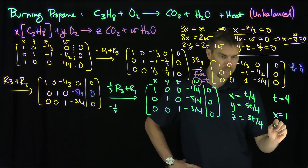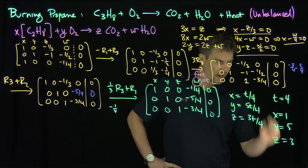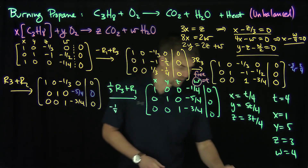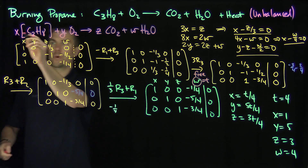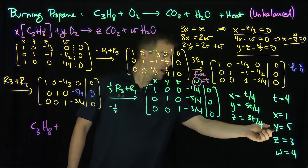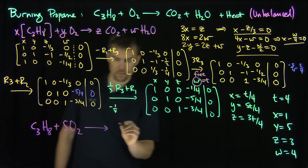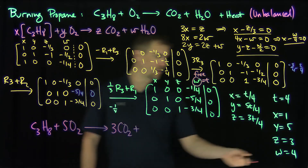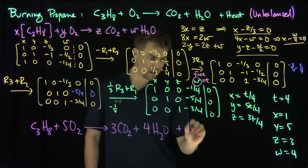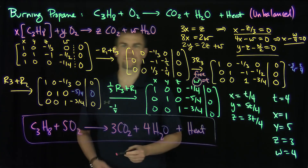With t equals 4: X equals 1, Y equals 5, Z equals 3, and W equals 4. Going back to our original equation, the balanced equation is: C3H8 plus 5 O2 goes to 3 CO2 plus 4 H2O, and of course we get heat — energy transfer — since it's a combustion reaction. And so this is the balanced equation for burning propane. Thank you very much.